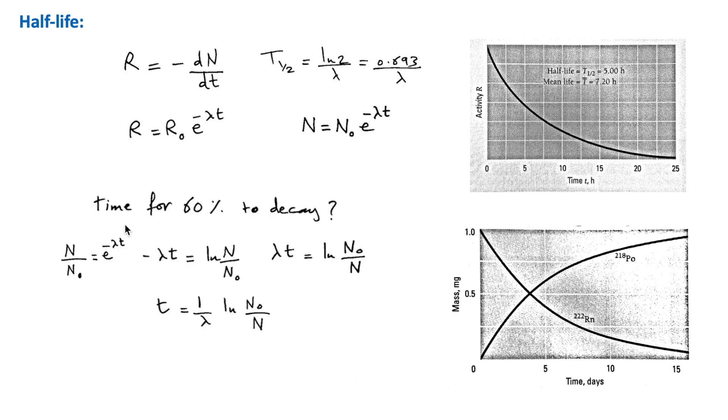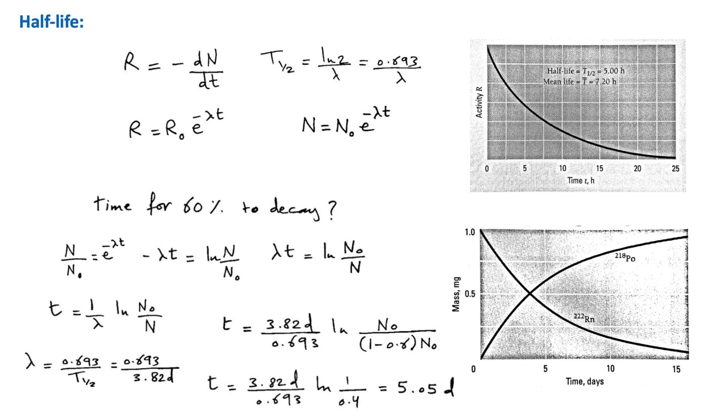Let's calculate the time for 60% of radon to decay. Using this equation, we can take the natural logarithm of both sides, and we get an expression for t. Then we calculate the decay constant by substituting for the half-life of 3.82 days.